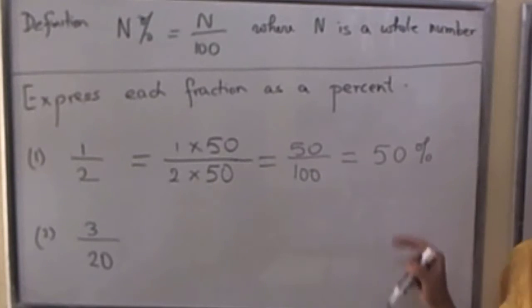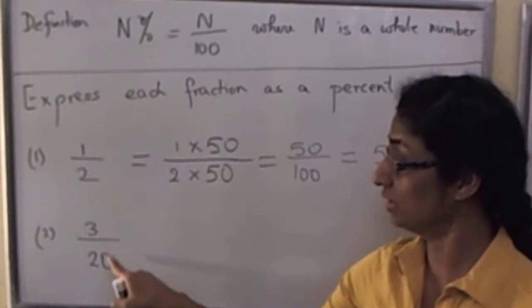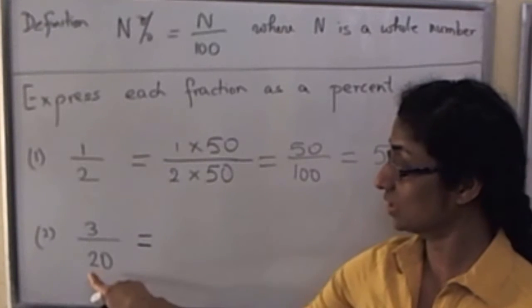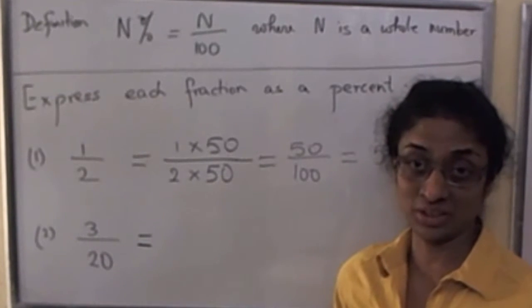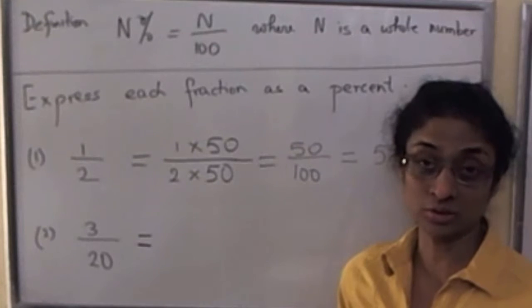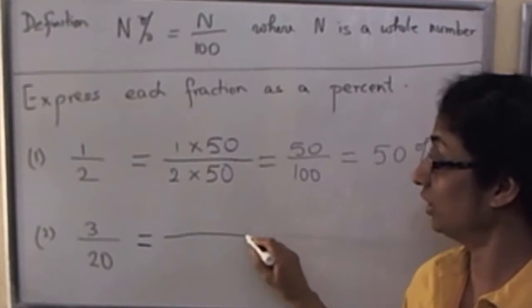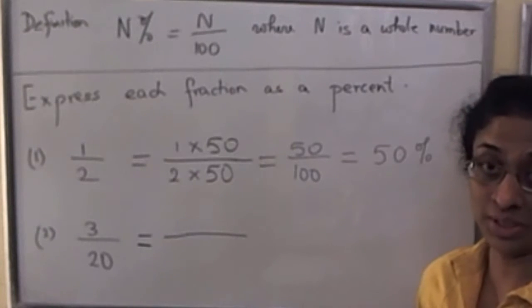So 50 over 100 is just 50%. We proceed similarly to rewrite 3 over 20 as a percent. We notice that in the denominator we have 20 and not 100. We also know that 20 times 5 is 100. So with that knowledge, we use FFEF...